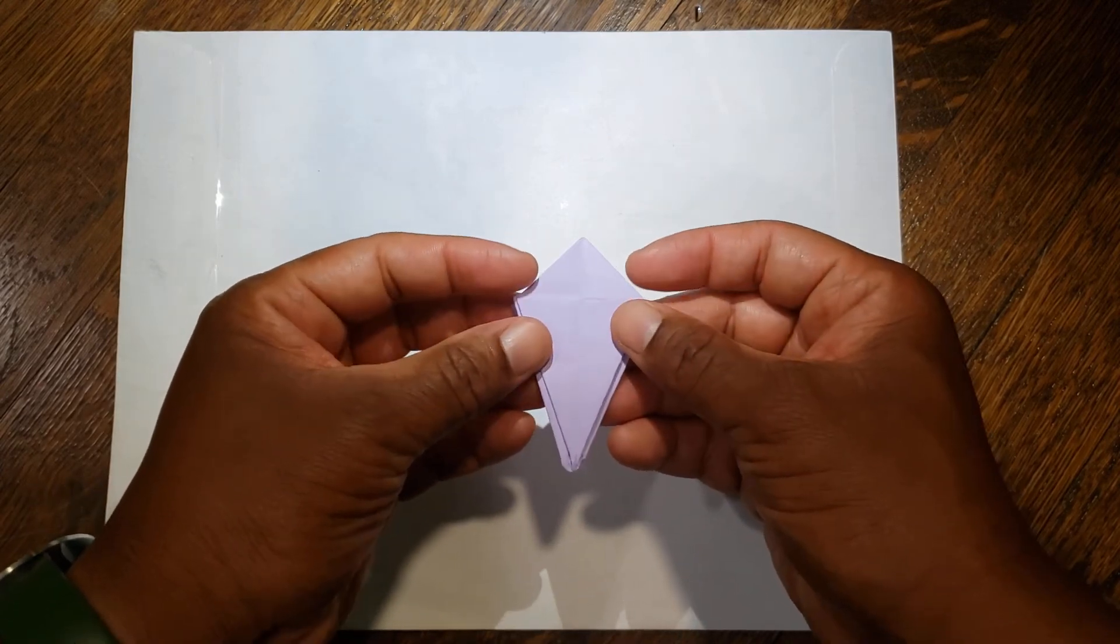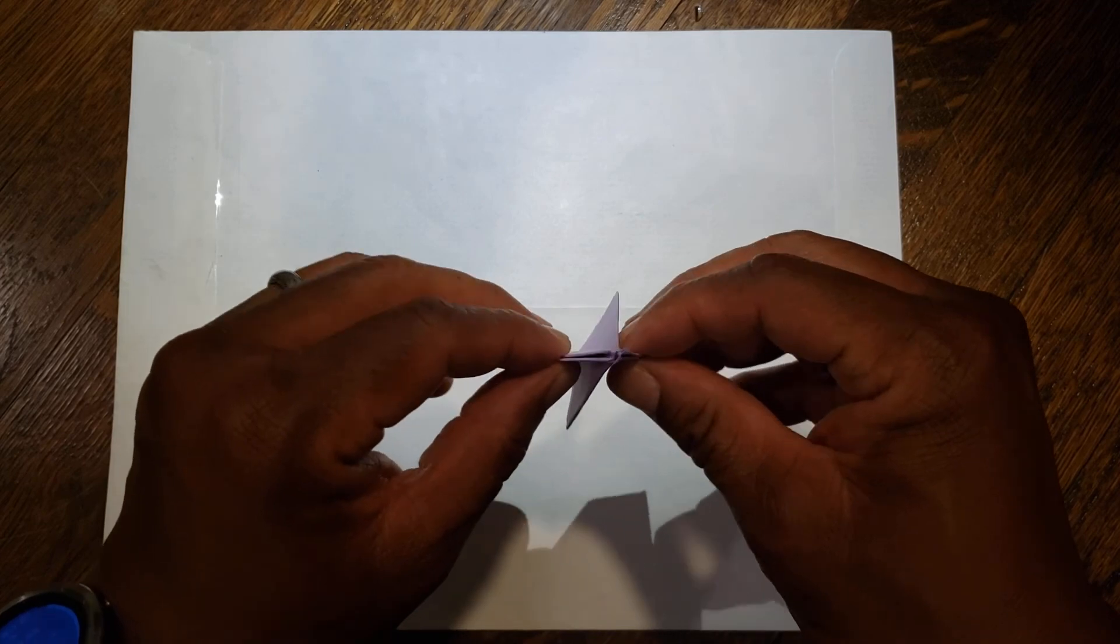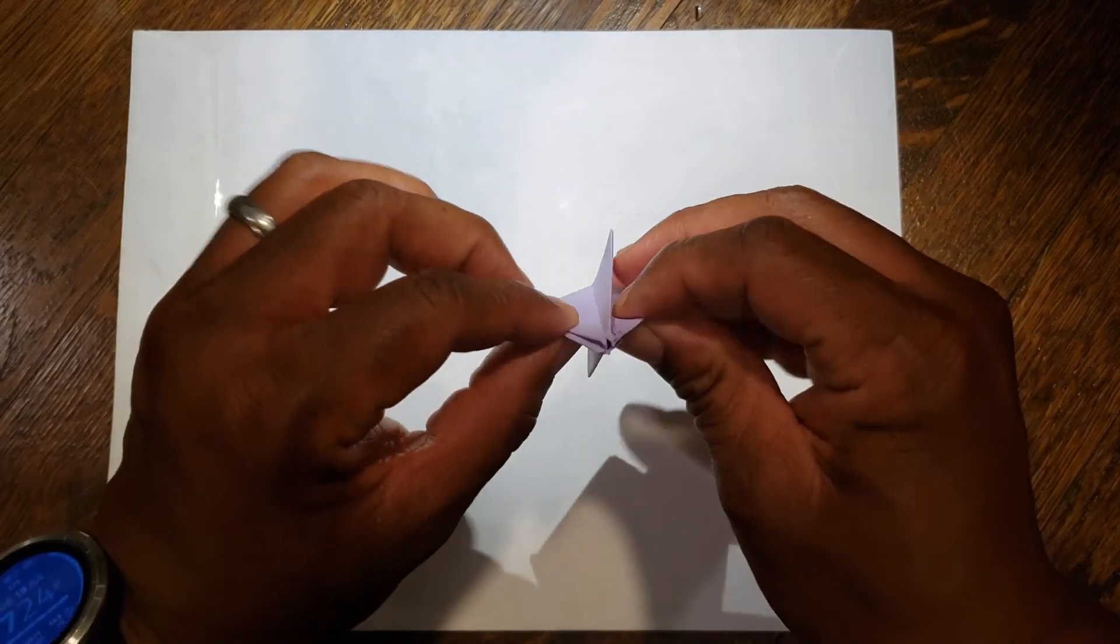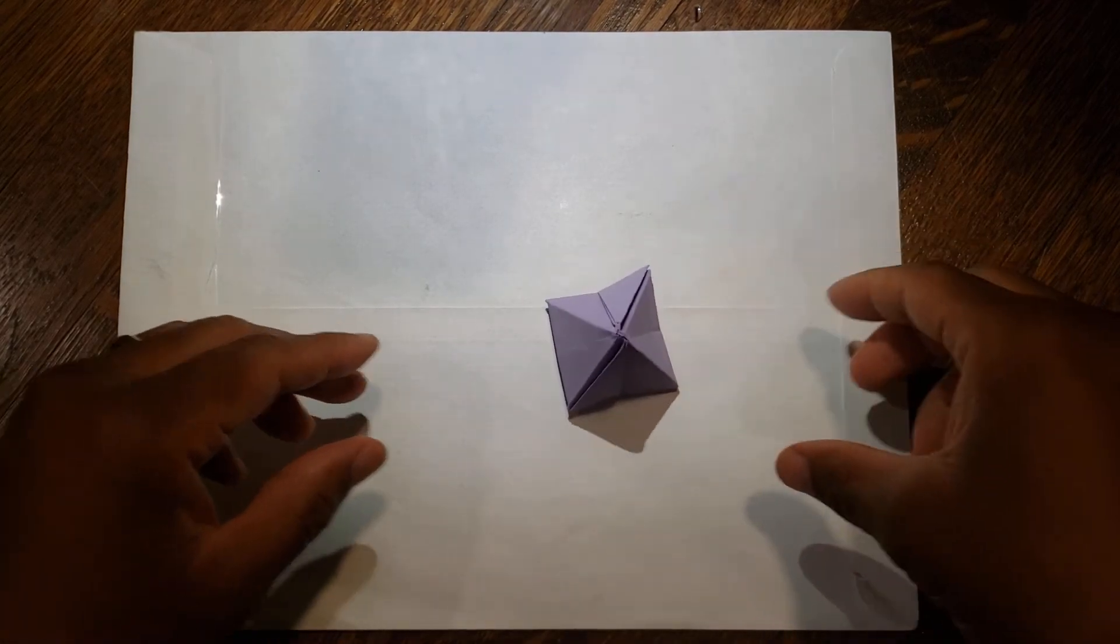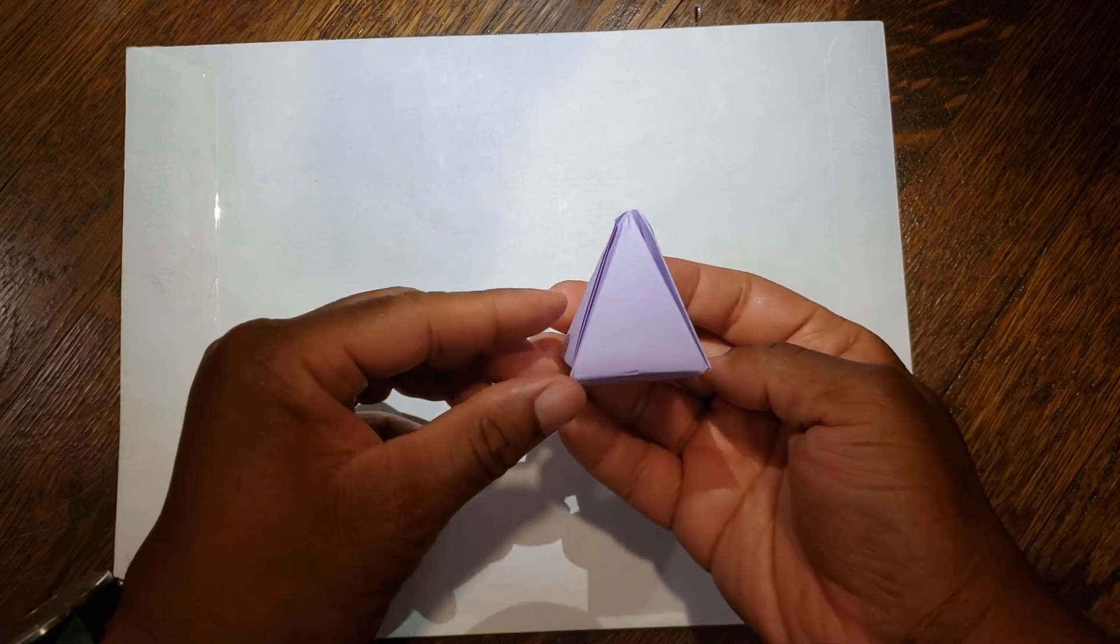The last step is at the bottom of your pyramid, there's a small opening. You're going to blow in that opening, and that's going to inflate your pyramid. And now you have an inflatable pyramid.